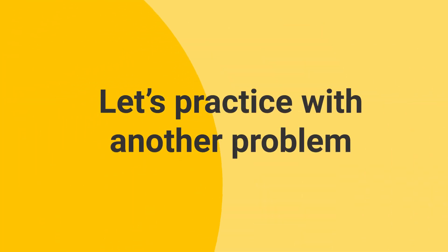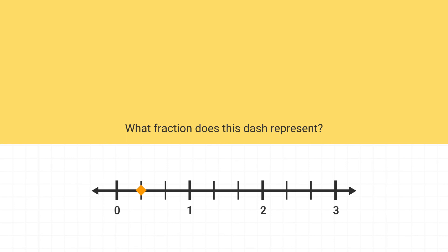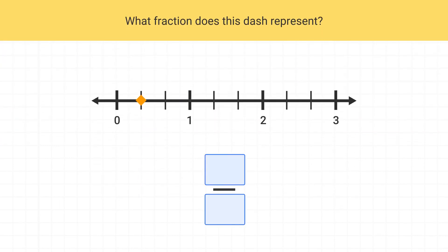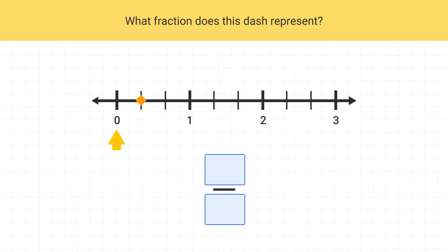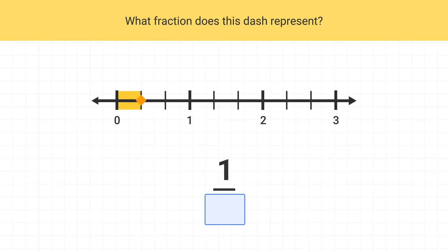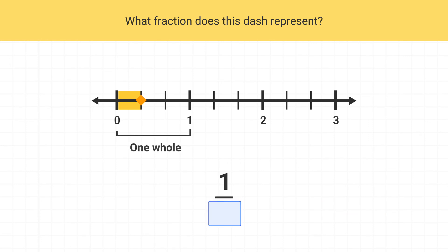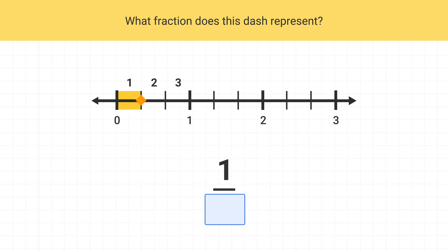Let's practice with another problem. Let's find out what fraction this dash on the number line is. What should the numerator of my fraction be? The numerator of my fraction is the number of shaded parts. Being at this dash means we have all of the parts up until here. We only have one shaded part, so our numerator is one. Next, what should my denominator be? The denominator is the total number of parts in one whole. This is one whole on the number line, and we can see it's made up of three parts. The denominator is three. This dash on the number line represents the fraction one-third.